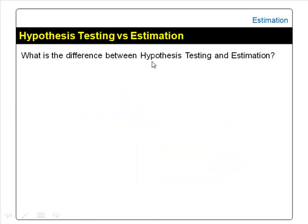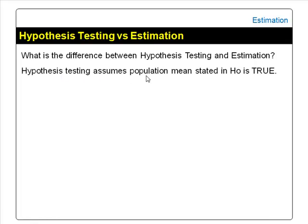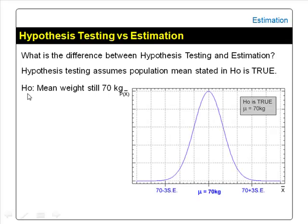So what is the difference between hypothesis testing and estimation? In hypothesis testing, we assume the population mean stated in the null hypothesis is true. We do not make this assumption in estimation. Instead, in estimation, we assume the population mean is unknown.